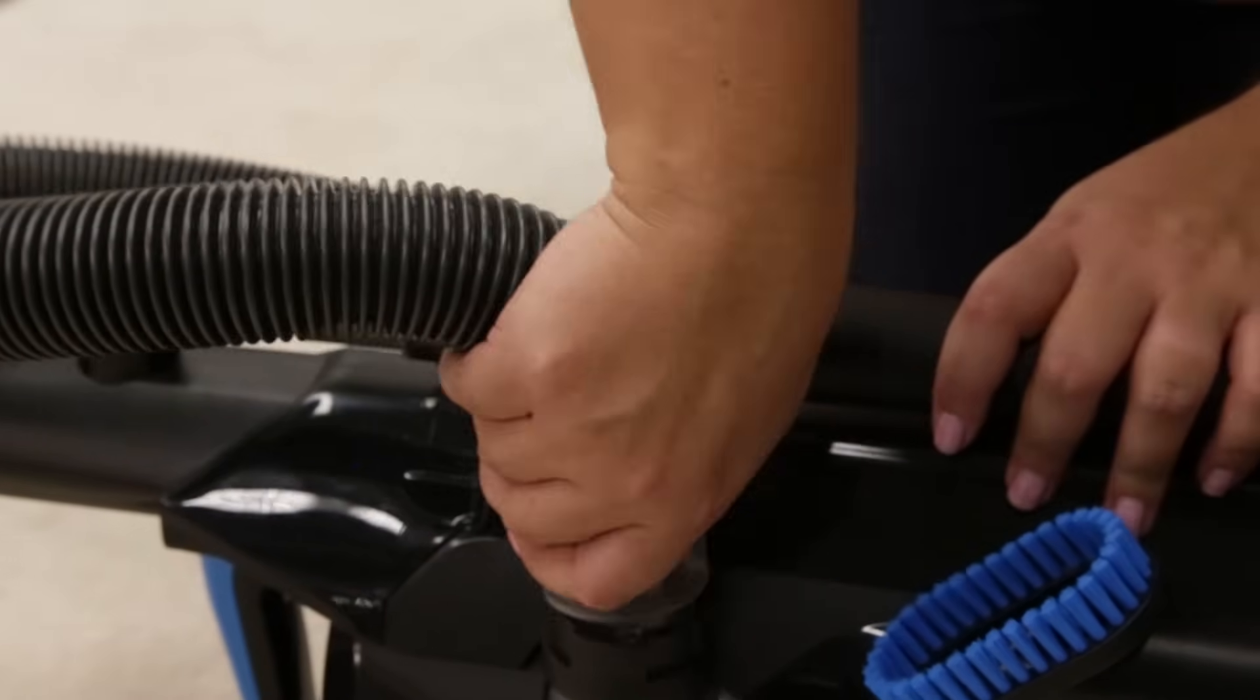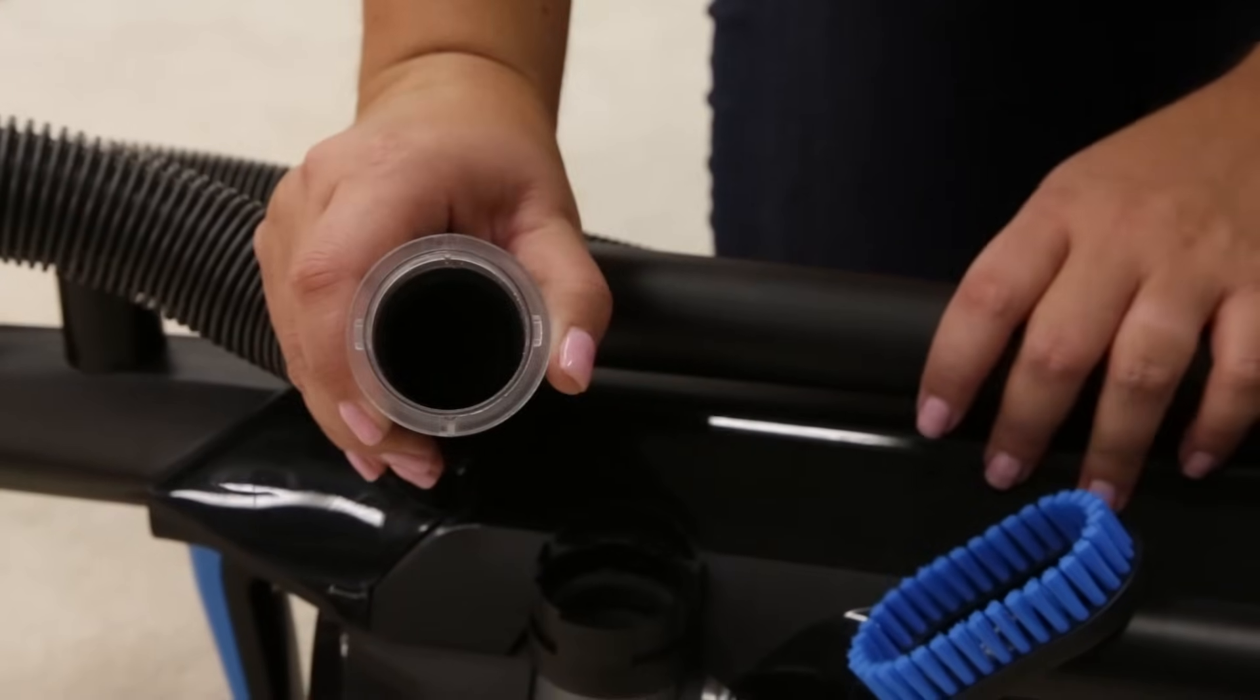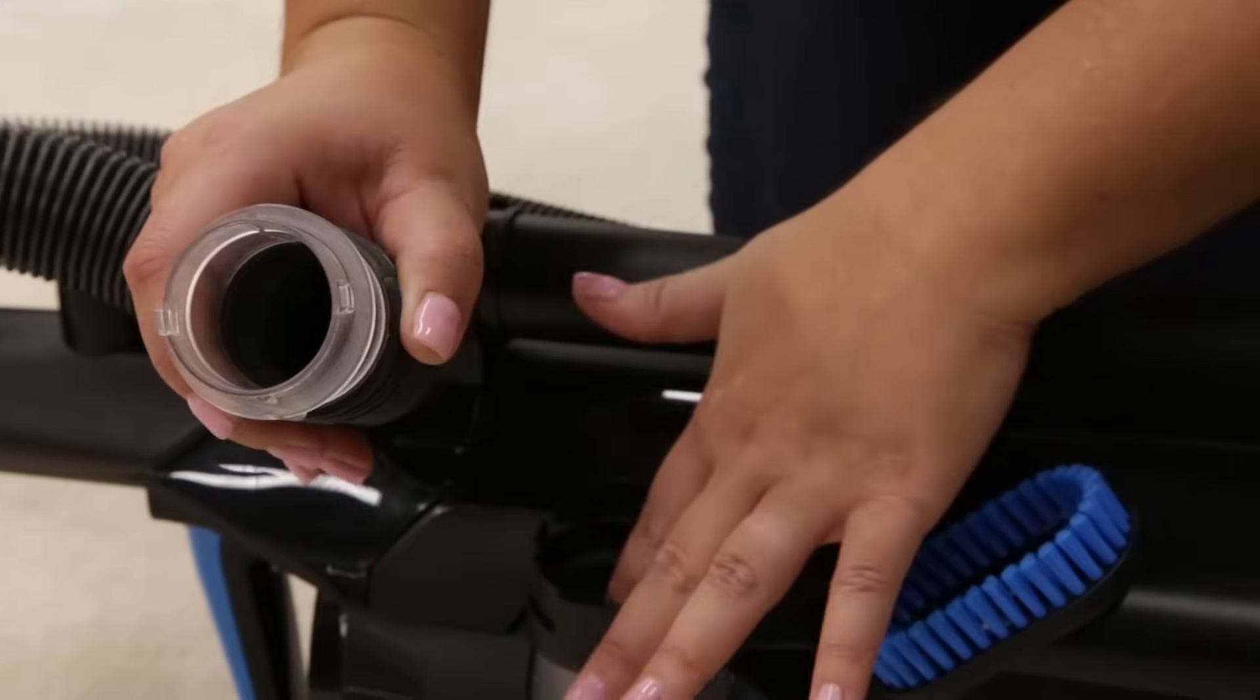To clear a clog, remove the hose from the back of the vacuum by twisting it to the left. Remove any debris that may have been clogged.